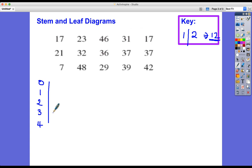I think the highest value is maybe 48, so let's start to put these values in. 17 would be 1, 7. Then we'd have 23, 46, 31, 17, 21, 32, 36, 37, 37. Then we've got 7, so 0, 7 units. 48, 29, 39, and 42.